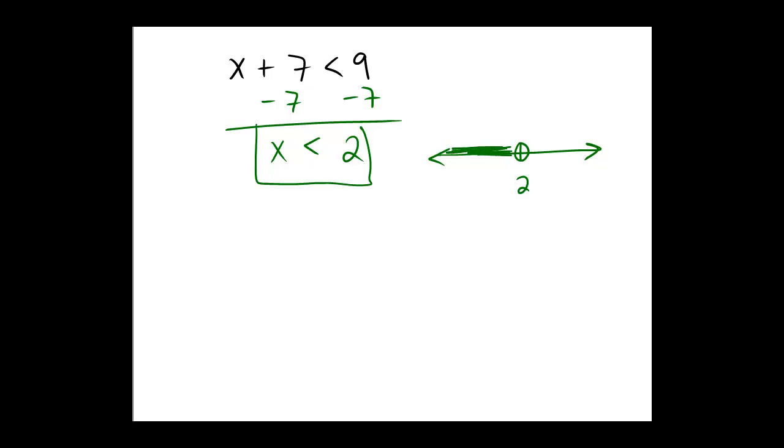And the shading this time, since it's less than, would shade to the left. As an interval, we would say that the shading begins at negative infinity, and it goes up until 2, but it doesn't include 2. And that's why we use the parentheses on the right instead of the brackets.